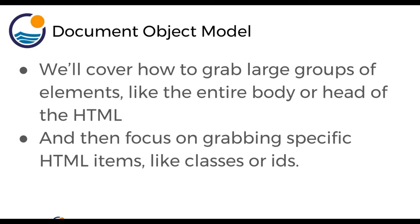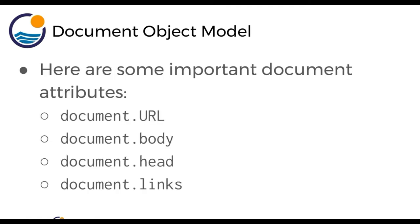Here are some important document attributes. You can call document.URL, .body, .head, and .links. document.URL returns the actual URL of the website. document.body returns everything inside the body — the HTML of the entire body. document.head returns everything in the head of the page. And document.links returns all the links on the page.